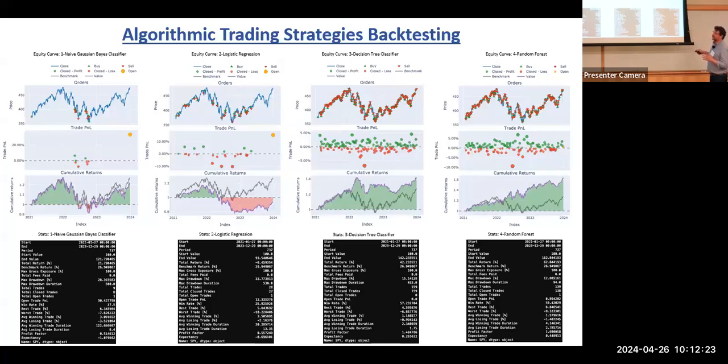To give you a visual example of what could be a wrong strategy would be logistic regression. If you look here, the cumulative returns curve shows it's underperforming the market clearly. But if you look at decision tree or random forest, the total return was 42% and the performance of the benchmark was 26%, almost double.